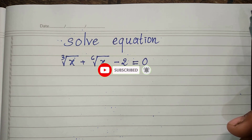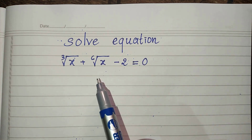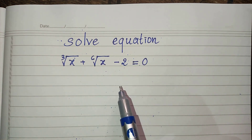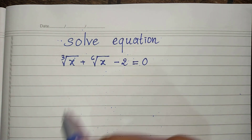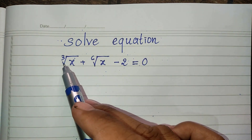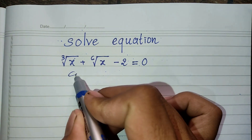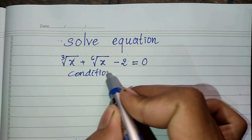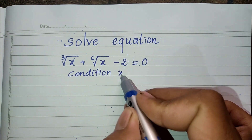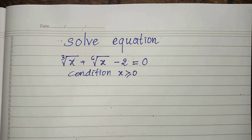Now we go to the solution together. Before we solve this equation, we change the condition. We let our equation have the third root and the sixth root. So the condition is that h must be positive or equal to zero.